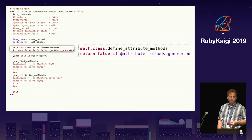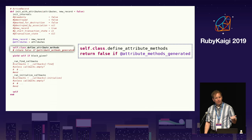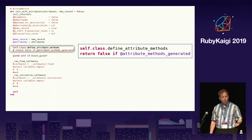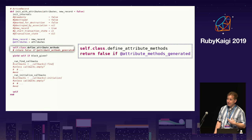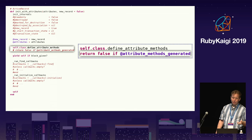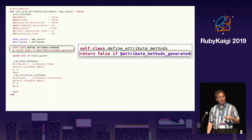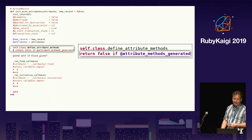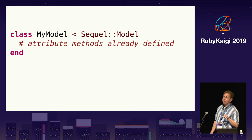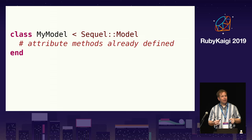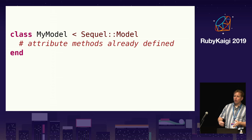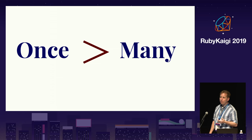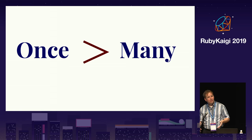After setting the instance variables, the ActiveRecord model instance then asks its class to define instance methods for all of the model's attributes. This needs to be called for the first instance retrieved because ActiveRecord does not define the attribute methods until then. But after the first instance has been retrieved, this method just returns without doing anything, slowing down all model instance creation. Sequel avoids this by defining attribute methods when you create the class, so all model instances can assume the attribute methods have already been created. This represents another general optimization principle: any time you have code that is called many times, see if you can run that code once instead.